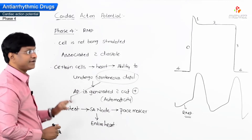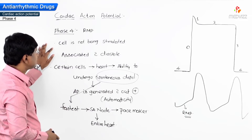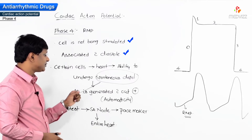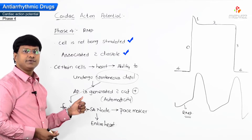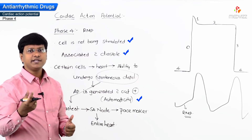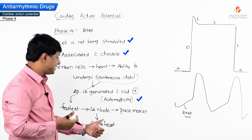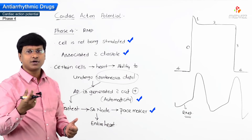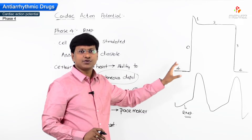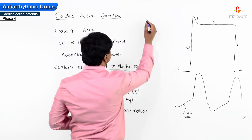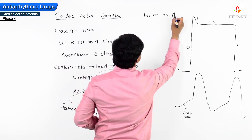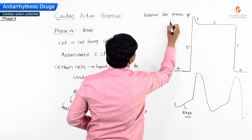So in phase 4 the cell is not being stimulated, and phase 4 is associated with the diastole of the heart. Certain cells of the heart have the ability to undergo spontaneous depolarization — the action potential is generated without stimulation — and that is automaticity. The spontaneous depolarization is fastest in the SA node, making it the pacemaker, and the electrical activity originating from the SA node is propagated to the entire heart. Now let me correlate the various phases of the action potential with the ECG.